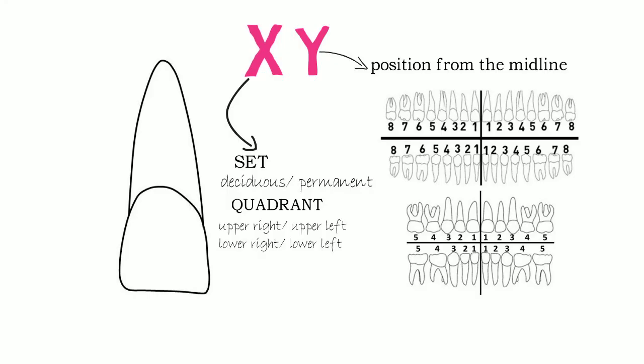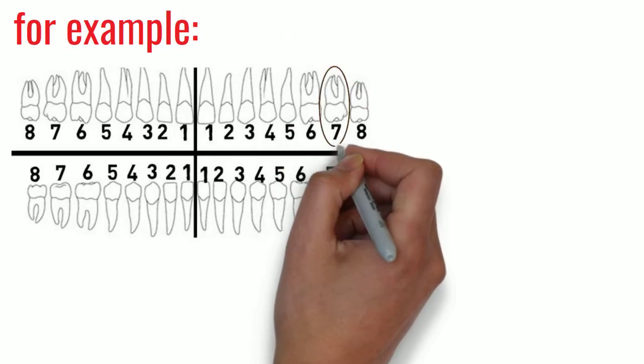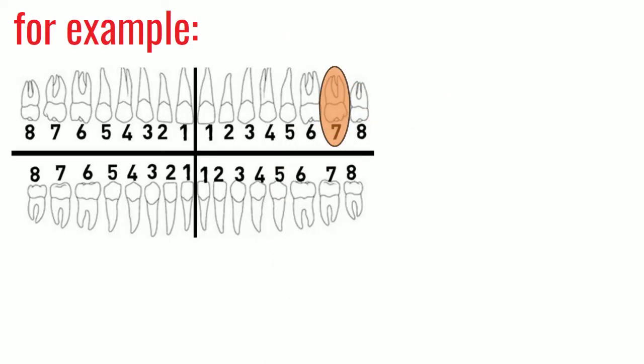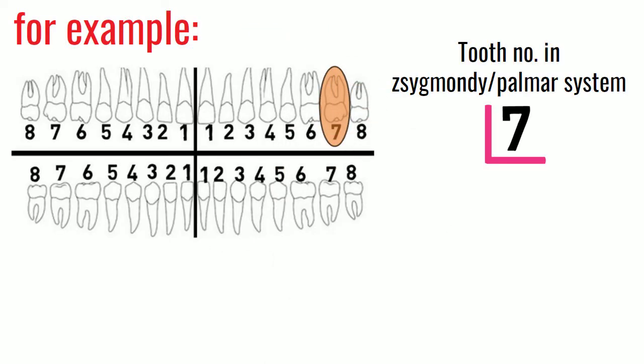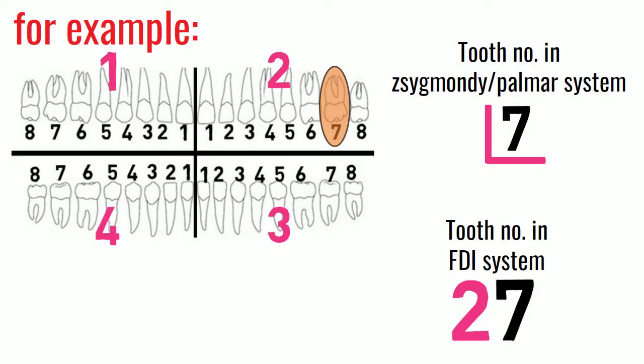Numbers 1, 2, 8 in permanent dentition and 1, 2, 5 in deciduous dentition. In simple sense, it is a type of modified Zigmundi-Palmer system where the L-shaped symbol is replaced by a number.